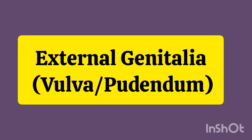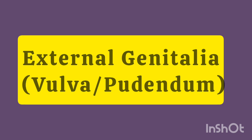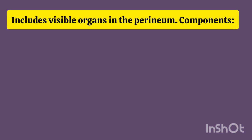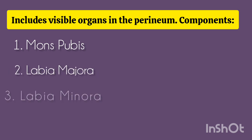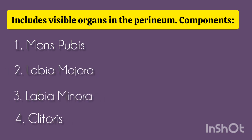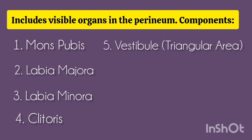External Genitalia — also called the vulva or pudendum — includes the visible organs in the perineum. Its components are: 1. Mons pubis, 2. Labia Majora, 3. Labia Minora, 4. Clitoris, 5. Vestibule (triangular area), and 6. Vestibular bulb.